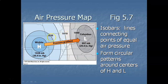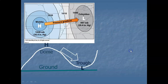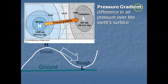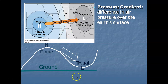Meteorologists constantly make isobar maps. We have a center of low pressure and a center of high pressure, and the isobars tend to form circular patterns around these centers, representing intensification of the low or high pressure. I now want to introduce the term pressure gradient. A pressure gradient represents the difference in air pressure over the Earth's surface.